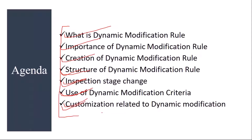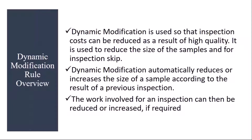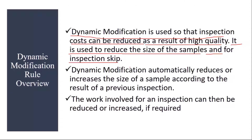Dynamic modification is used so that inspection costs can be reduced as a result of high quality. It is used to reduce the size of the sample for inspections. In some companies, there is no need to inspect each and every inspection lot or batch. Suppose you are receiving a material from a reliable vendor, and the organization decides there is no need to inspect every incoming batch from that vendor.